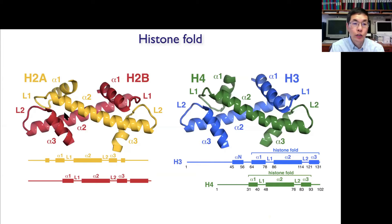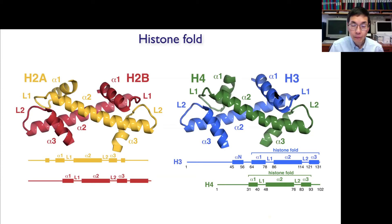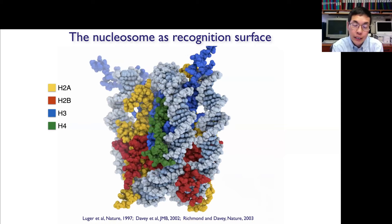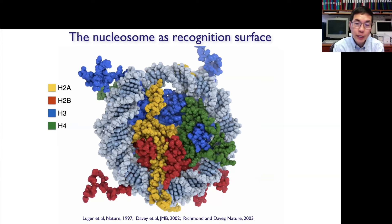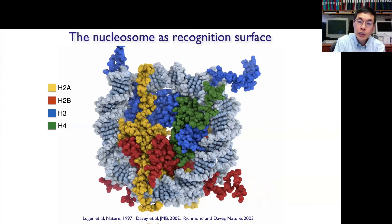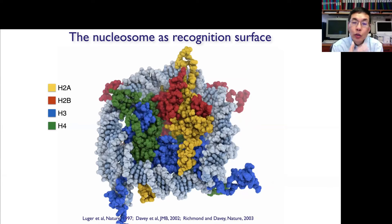This crescent-like structure with alpha-1, loop-1, alpha-2, loop-2, alpha-3 — and especially the alpha-1, loop-1 region — is something I'll come back to towards the end. My favorite way of looking at the nucleosome is in space-filling representation, because it really shows the interesting surfaces available to chromatin enzymes. When I started my lab in 1998 and first saw the nucleosome structure, one thing that struck me was just how much of the surface was accessible.